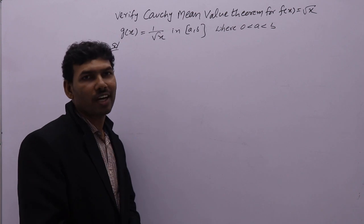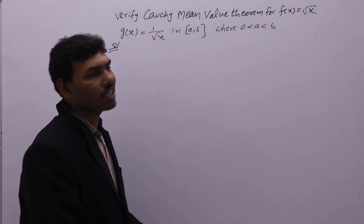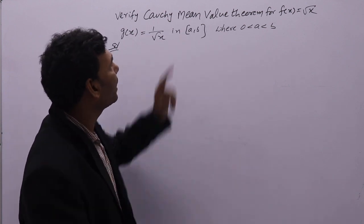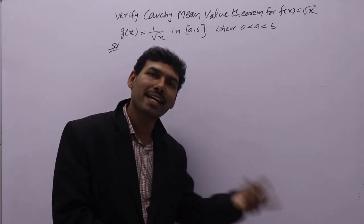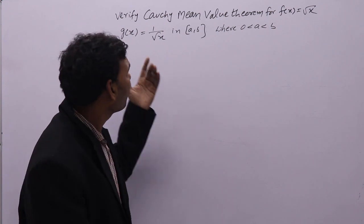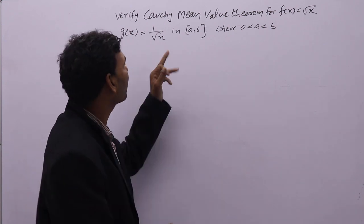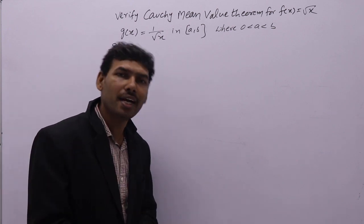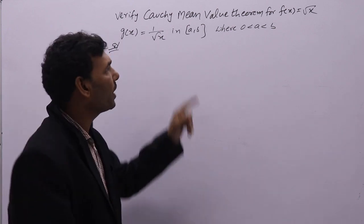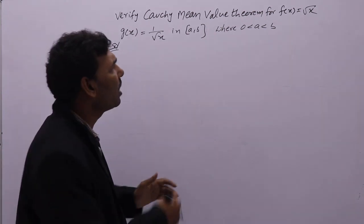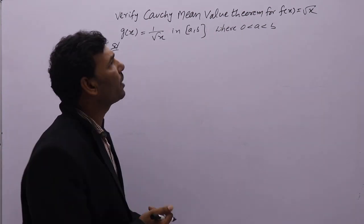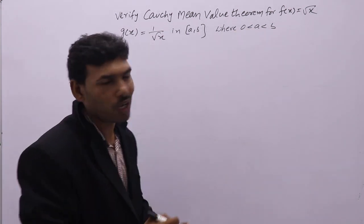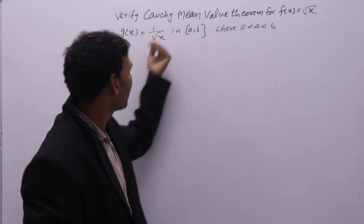Next problem: verify Cauchy mean value theorem for f(x) equal to root x and g(x) equal to 1 by root x on interval [a, b]. As mentioned earlier, if the functions are defined on interval [a, b] they should be continuous and derivable. Here the interval is [a, b] and root x and 1 by root x have no zero in this interval, so there is no case of getting infinity.